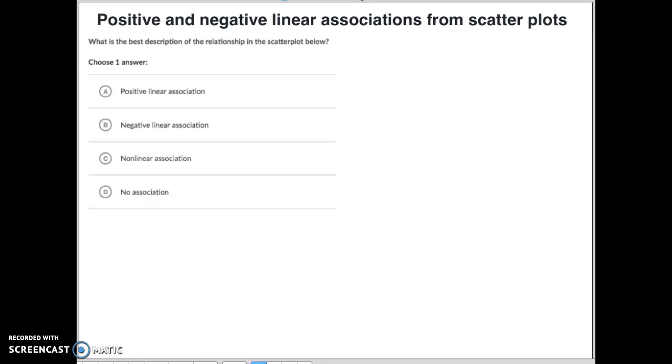I'm going to actually explain what each of these means. So every question that you're going to get is going to say that you need to find the positive and negative linear associations from the scatterplot. And it's going to simply say this right up here: what's the best description of the scatterplot below?